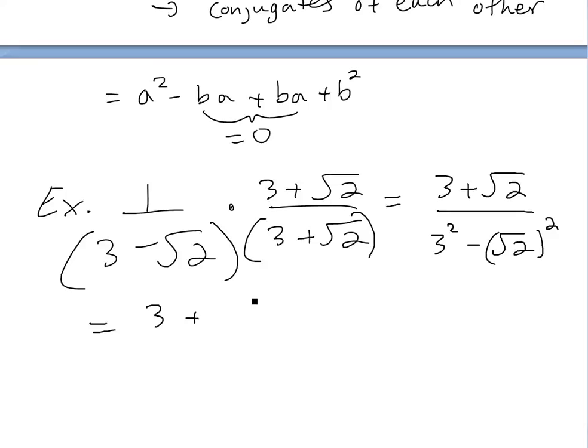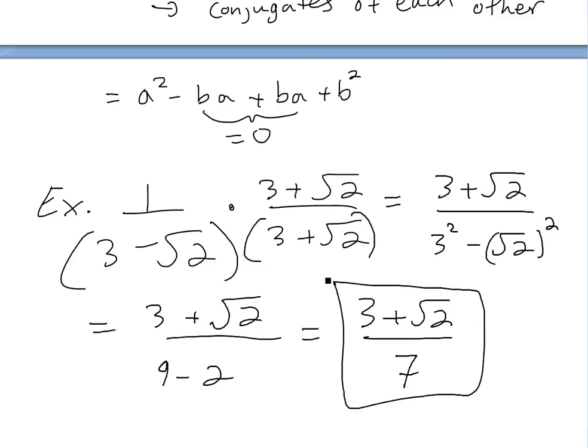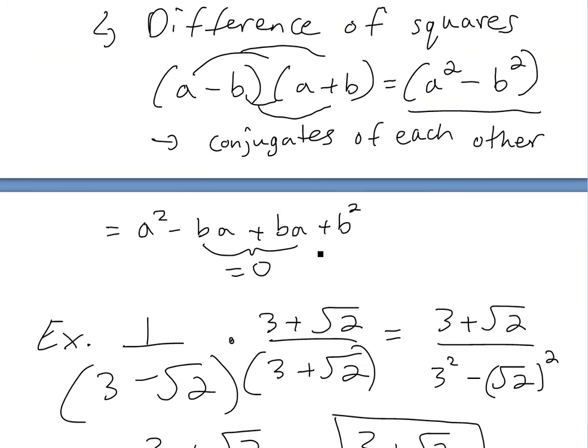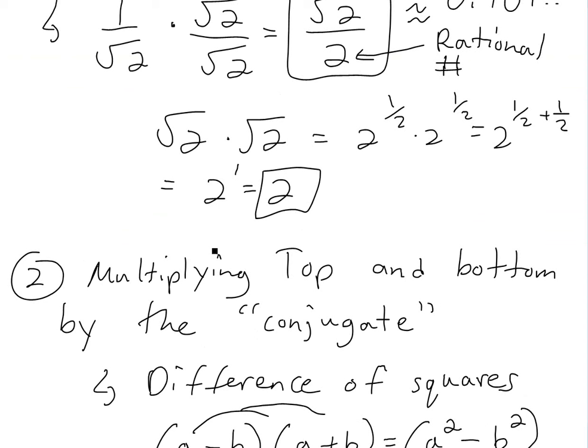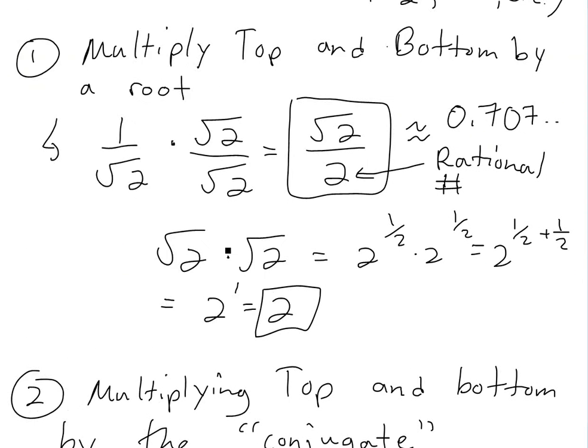And then this simplifies now. Now that you see the square root cancels, so we got rid of the irrational number. So this is going to be 9 minus 2. And this further simplifies to 3 plus square root 2 divided by 7 right here. There's our answer. Well, that's all for today.